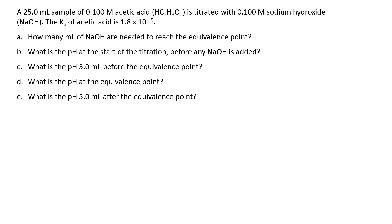We're going to calculate a couple of points along this titration. The first thing we want to know is how many milliliters of sodium hydroxide we need to reach the equivalence point. Then we want to know the pH at the start of the titration, the pH 5 milliliters before the equivalence point, the pH at the equivalence point, and the pH 5 milliliters after the equivalence point.